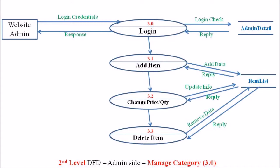While adding data, the admin can also perform other processes like change price or change quantity. In this process the admin can update the information of existing data items. These existing data are stored in the item list, and the process 3.2 — change price or change quantity — communicates with the database via an update information message. The database item list responds to the change price or change quantity process. These changes are then verified by the admin. Finally, the admin can delete an item from the website, and the process ensures the item is removed from the database item list, with the database replying to the process and the communication verified by the website admin.